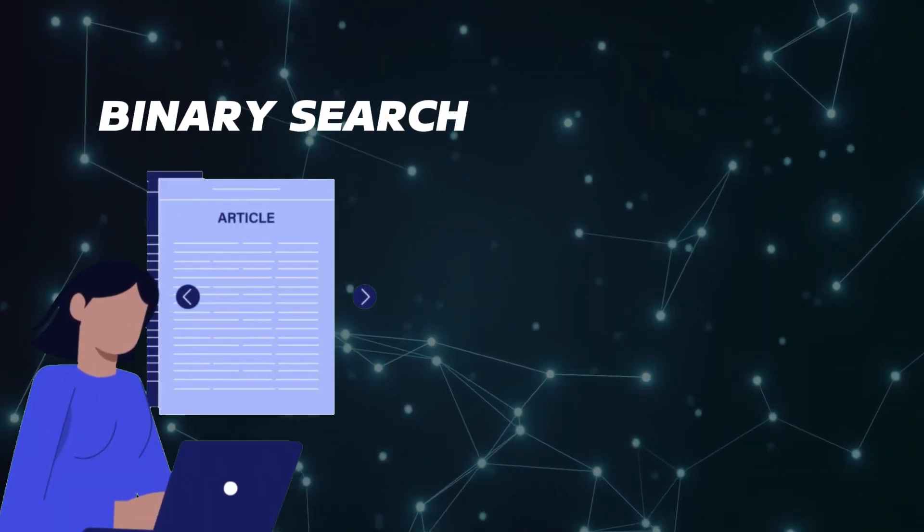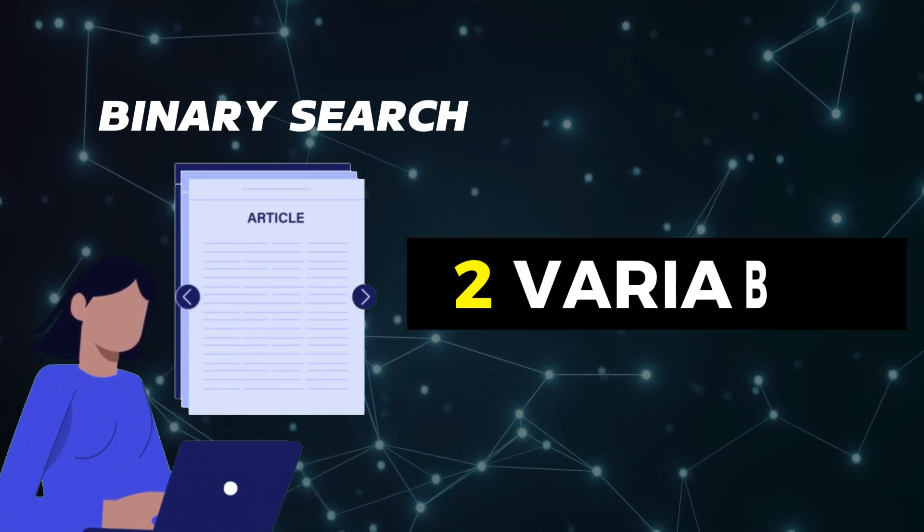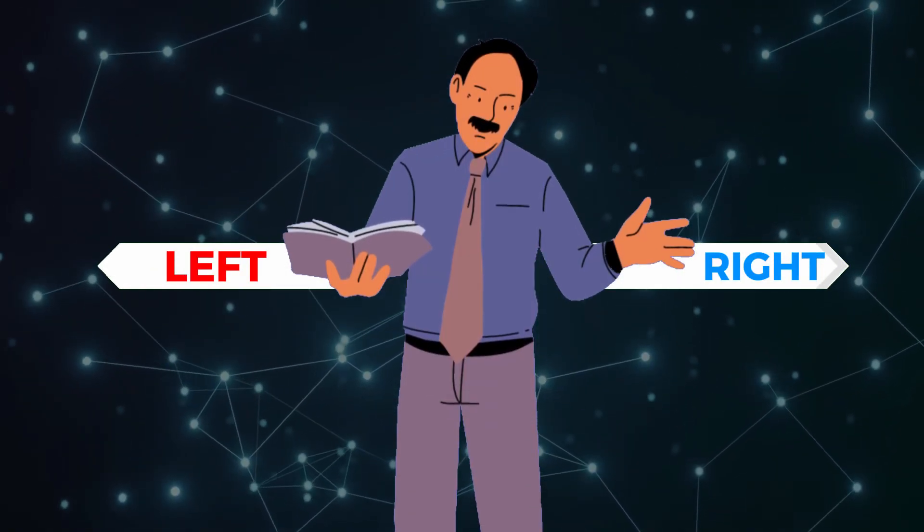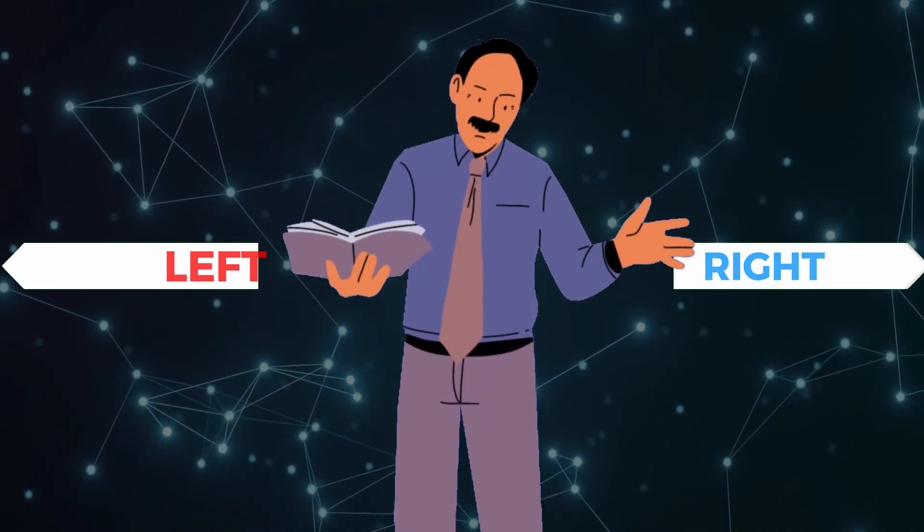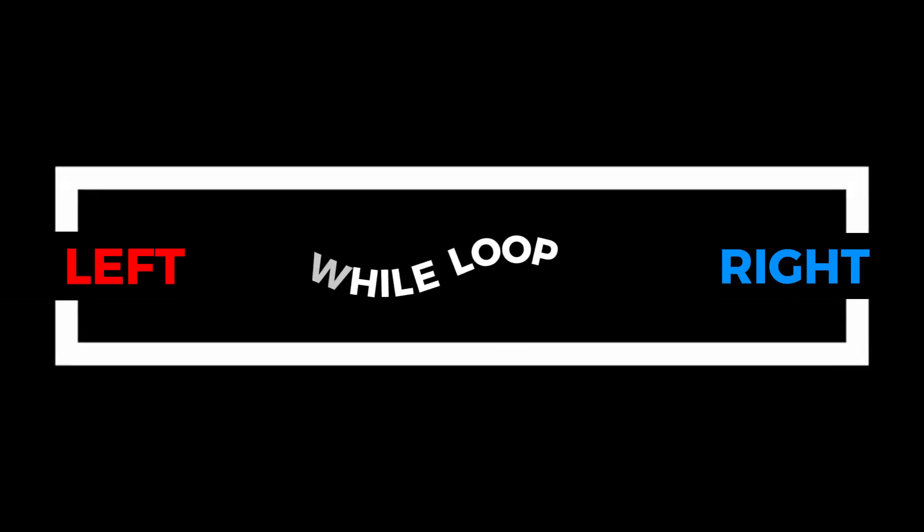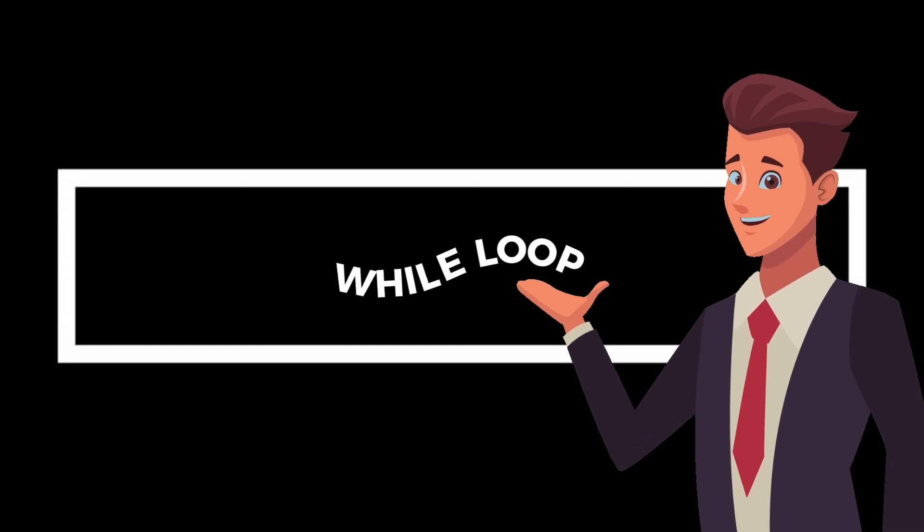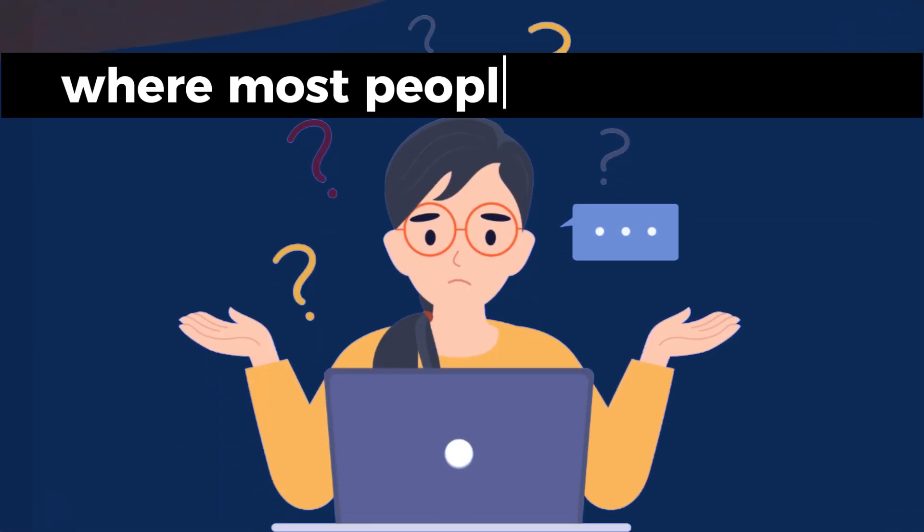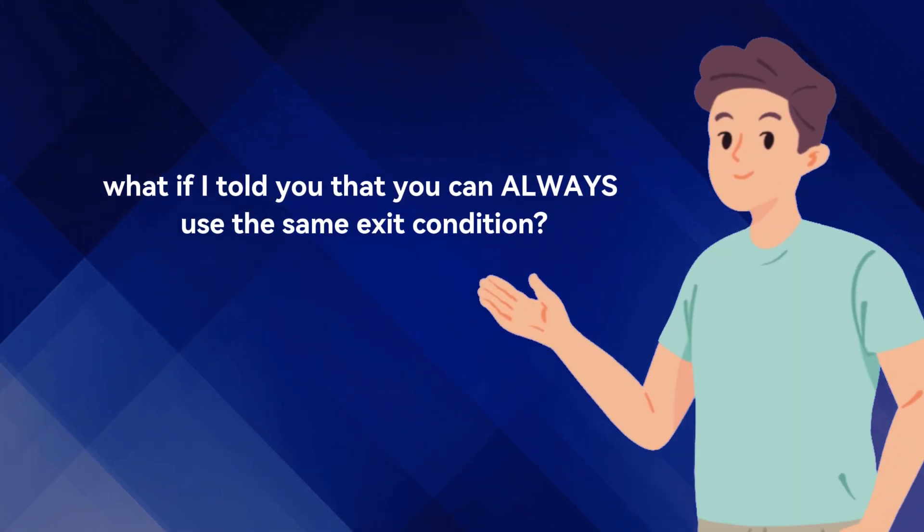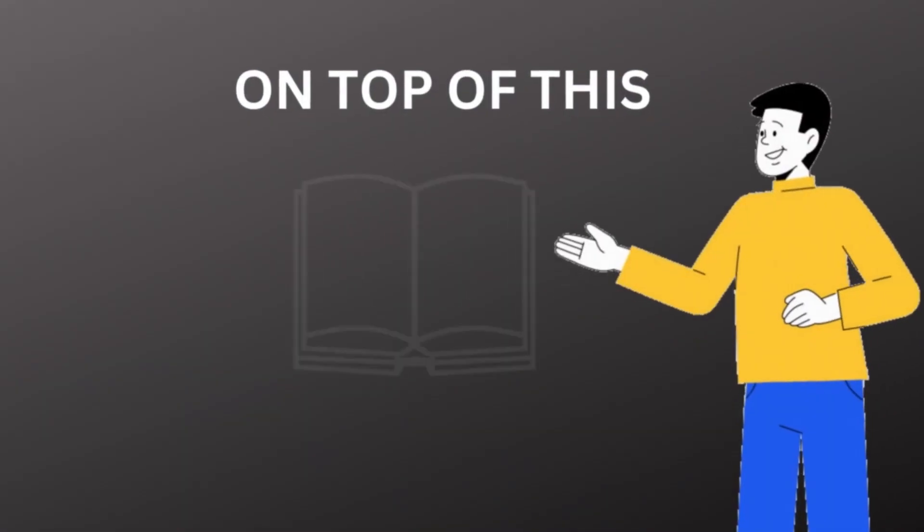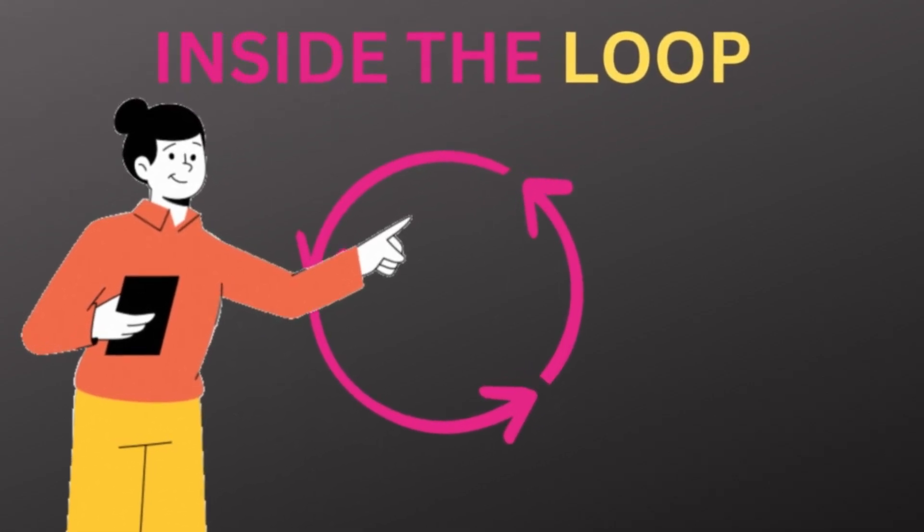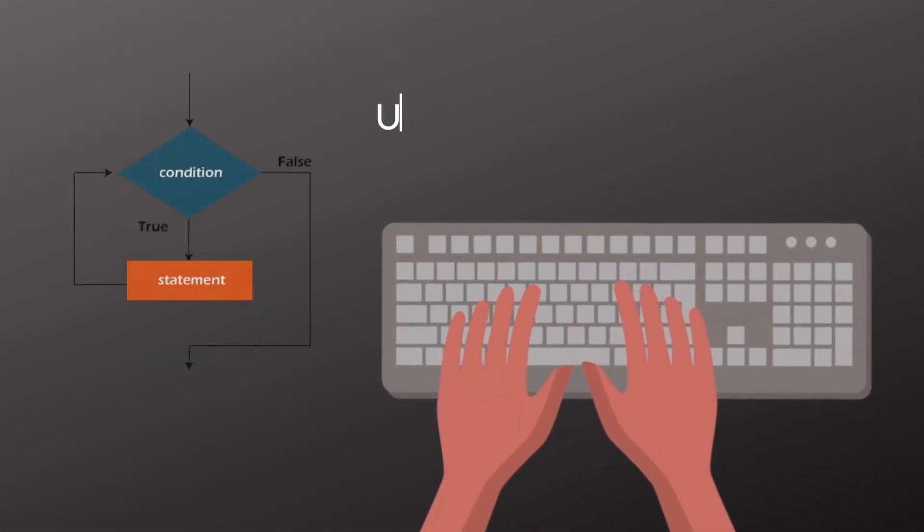Let's go ahead and introduce invariants into our implementation of binary search. So whenever we are writing binary search, we take two variable pointers, left and right. And the next step is to use a while loop which runs until both of these pointers cross each other. Now, deciding the exit condition of this while loop is where most of the people struggle a lot.